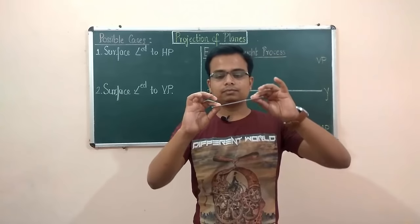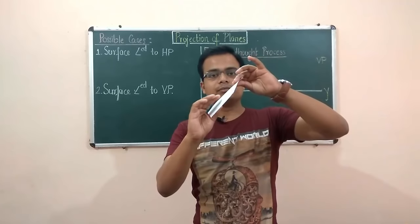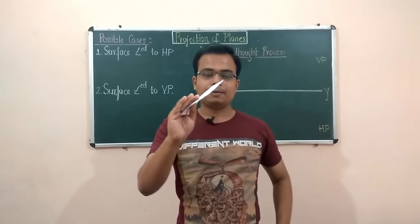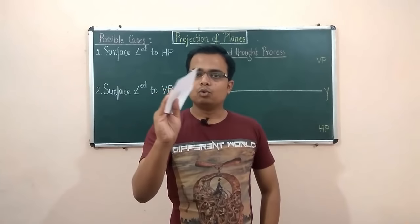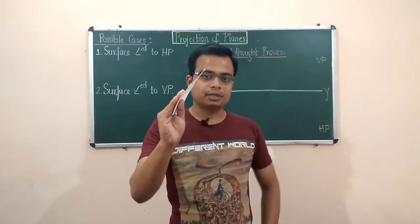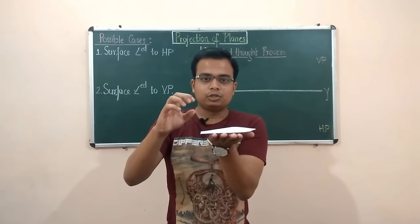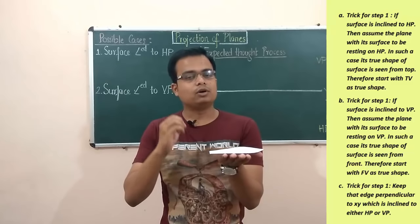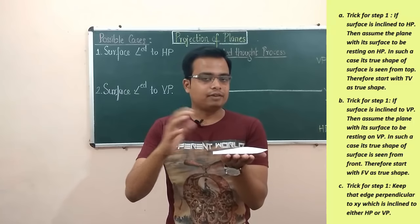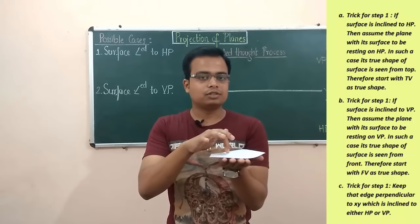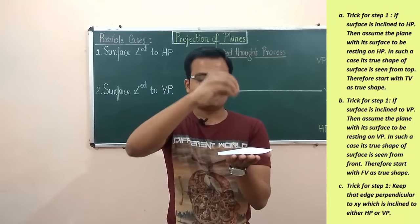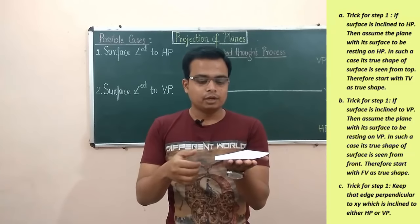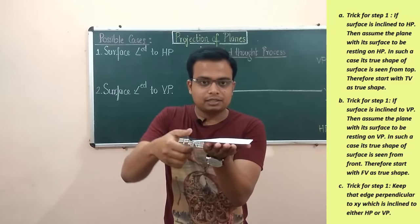You can see this angle theta that the surface makes with the horizontal plane. So what shall be the initial assumption? We are initially going to assume that the entire surface will be resting on the horizontal plane. Then we just need to think from where we can see the true shape of this surface — obviously the answer is from the top — and therefore you have to begin by making the top view first.